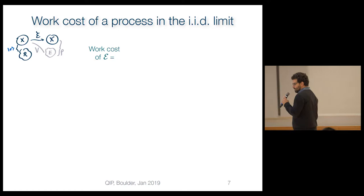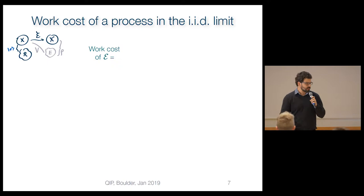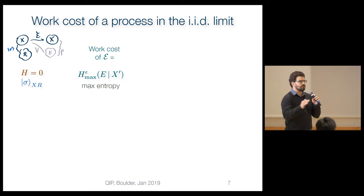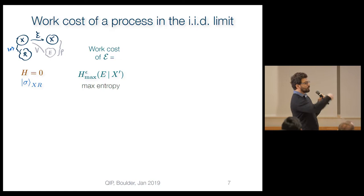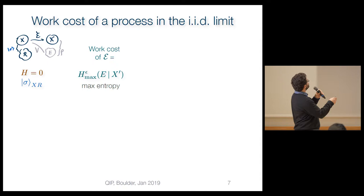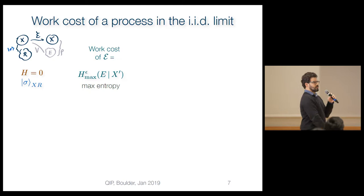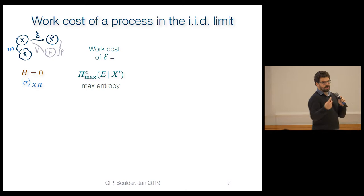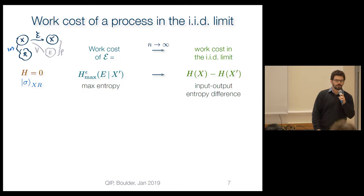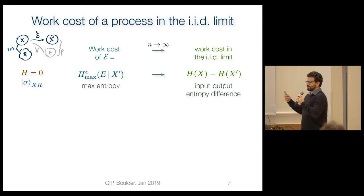Let me map out the different situations in terms of work cost. First, consider a trivial Hamiltonian H equals zero. The work cost of doing this process is given by the conditional max entropy — the conditional entropy of the environment system, which is a Stinespring dilation of our process. This should be interpreted as the amount of entropy being dumped into the environment from the point of view of the observer who finished the computation. In the IID limit, this conveniently transforms into the difference of entropies between the input and output — recovering a thermodynamic potential in the macroscopic limit.